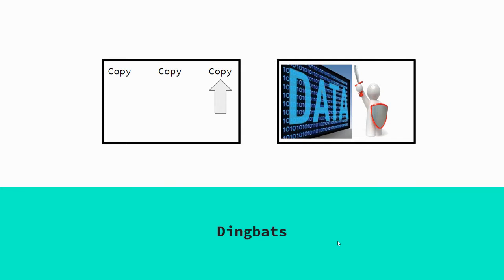On the left hand side you've got three words: 'copy', and you'll notice there's an arrow pointing to the copy on the right hand side — so the answer is 'copyright'. On the image on the right hand side you've got data which is being protected, so you might have the Data Protection Act, or 'data protection' would be fine.